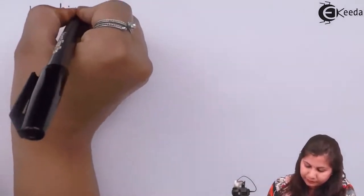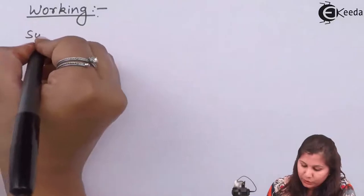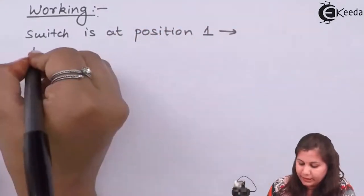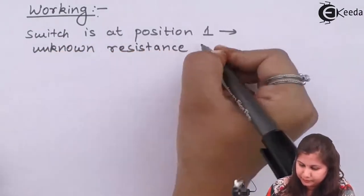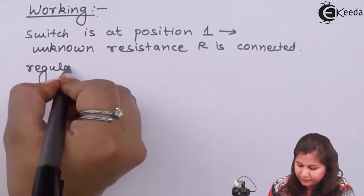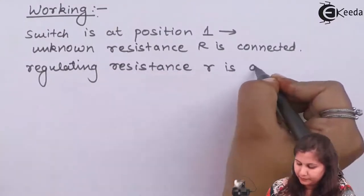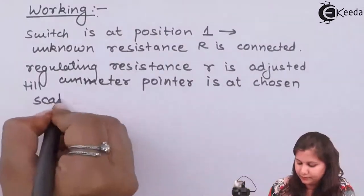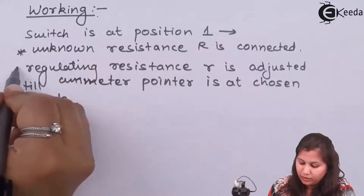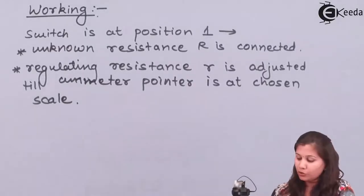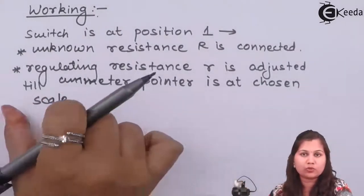Let us study the working in more detail. When the switch is at position one, the unknown resistance is connected. We are going to adjust the regulating resistance by changing it using the sliding contact of the rheostat, which is a variable resistance. We move the sliding contact so that a proper scale can be chosen for the ammeter.